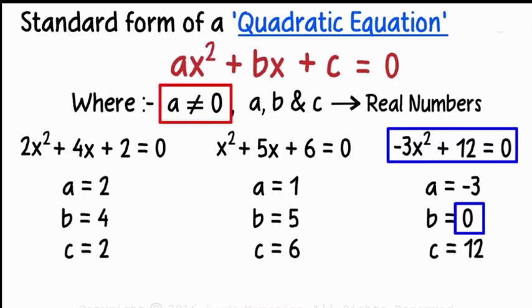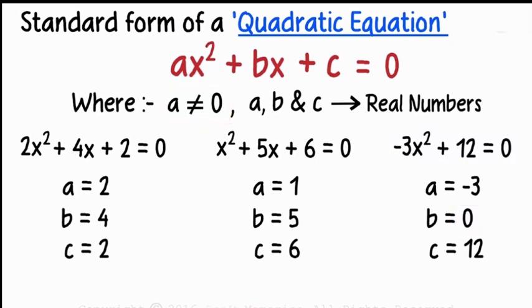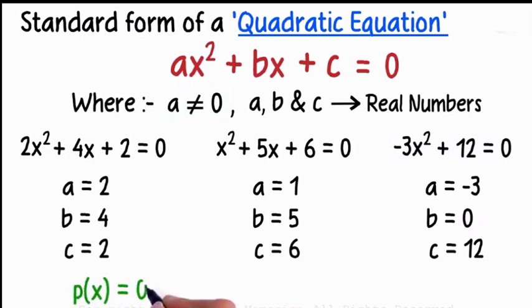Note that a is not equal to 0 — this is the first condition of the quadratic equation. We set the polynomial p(x) equal to 0, where p(x) is a polynomial of degree 2.